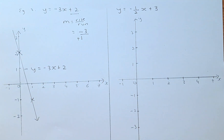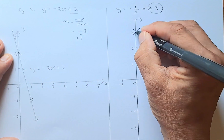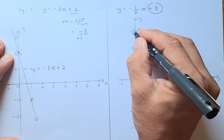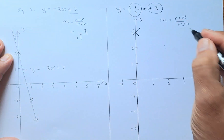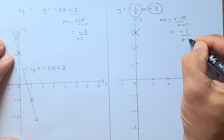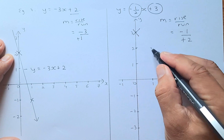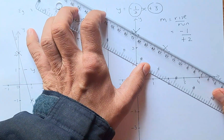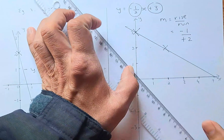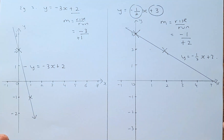Last but not least, the hardest example involves a fraction: y equals minus half x plus 3. Start with the y-intercept, which is 3, so the line cuts the y-axis at 3. The gradient is already in fraction form: minus 1 over plus 2. From that point, go down 1 and then run across 2 to plot the next point. Draw the line and label the graph y equals negative half x plus 3.